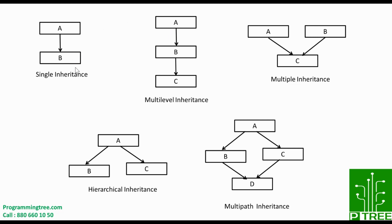Single inheritance is when class B is derived from class A. Here, class A is called the super or base class and class B is called the sub or derived class. In multi-level inheritance, class C is derived from class B, which is derived from class A — this structure is called multi-level inheritance.